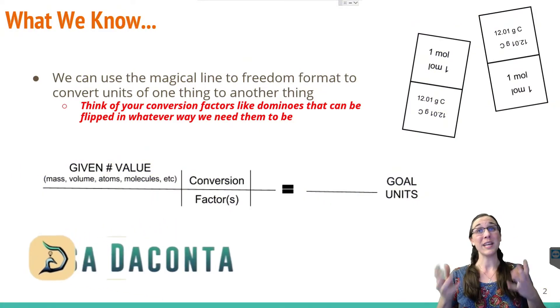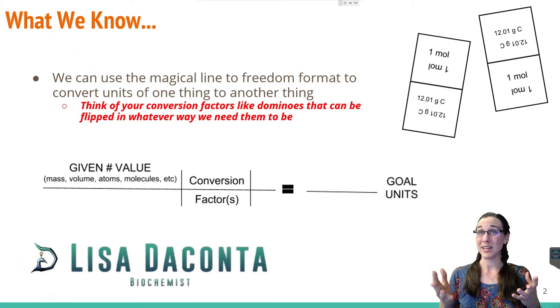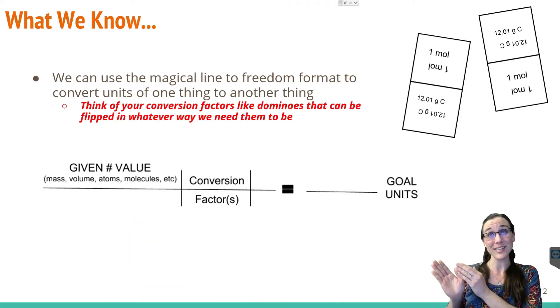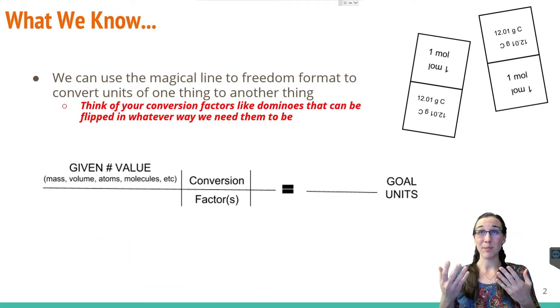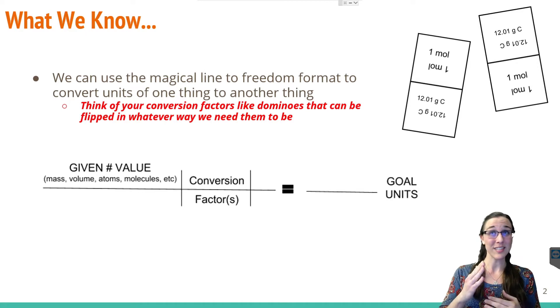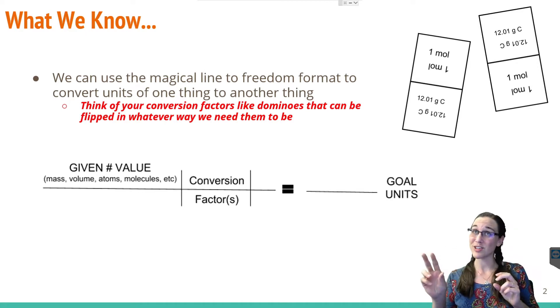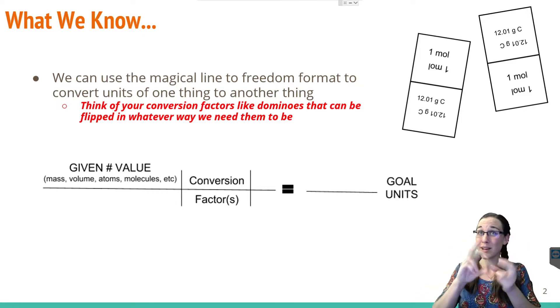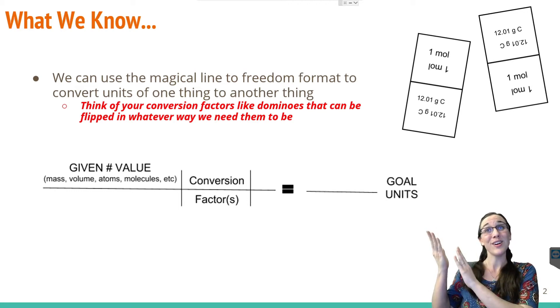As a refresher, we know from dimensional analysis that we need to use the magical line to freedom format. So draw a line, equal sign, space for your answer, goal units at the end of the line, then plug in your given value as the first thing on top of your line, put in all the conversion factors till your units cancel up. Just like domino pieces for the conversion factors, you can flip them back and forth until those units cancel and you end up with your goal unit.